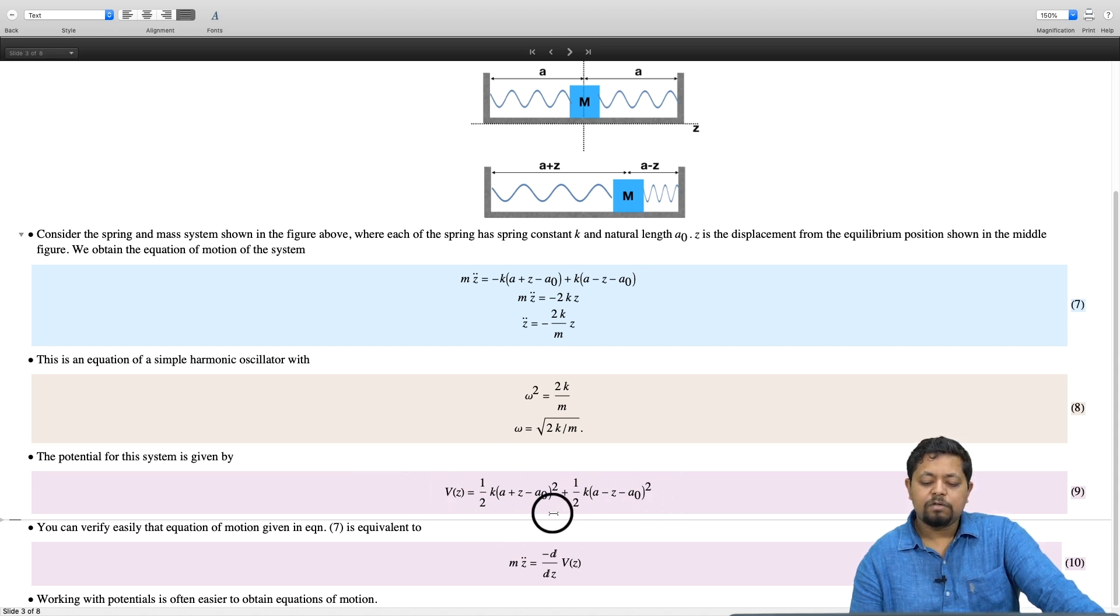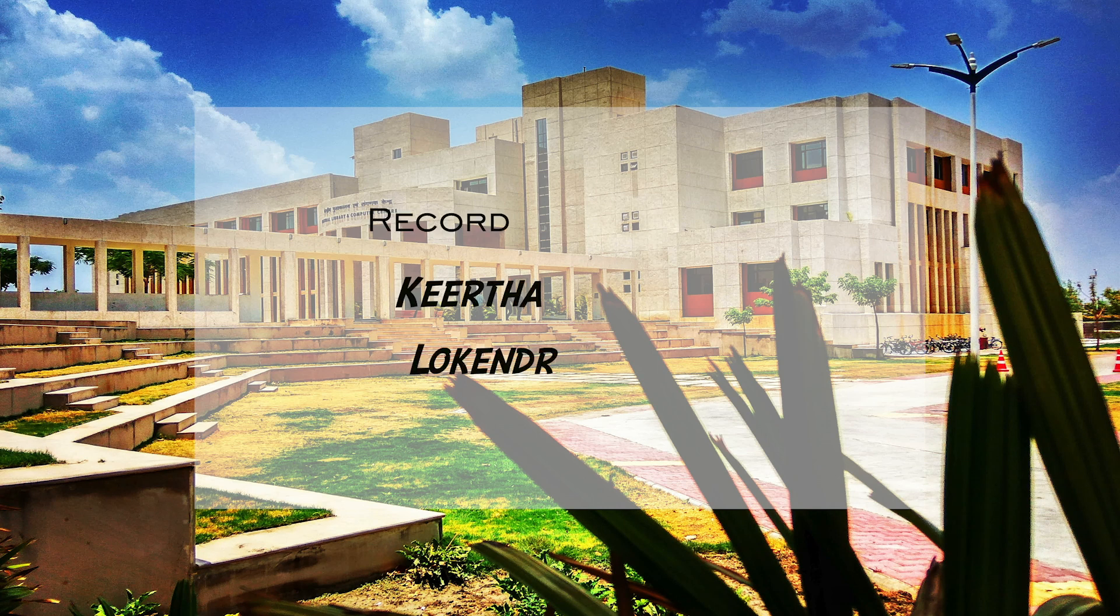If you expand this out, the highest power on z will be z squared. Therefore, we see from this potential that since the potential is quadratic with the coefficient of z squared being positive, we see that the system is going to follow a simple harmonic oscillation.